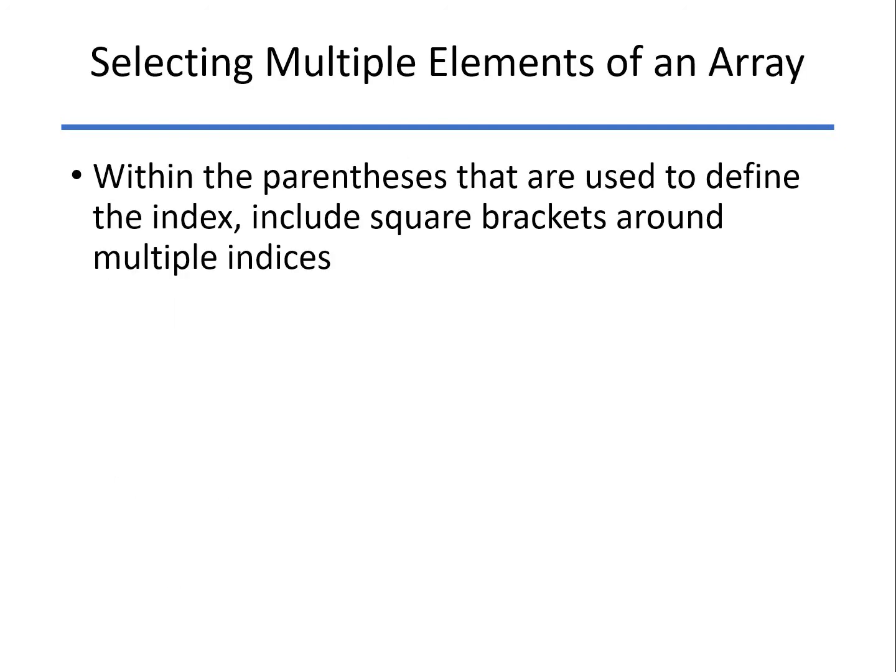If I want more than one, then I can use square brackets. So a of 2, 4, and 7 will make a new array with only the values of 8, 4, and 11. That is the second, fourth, and seventh values of the original array.